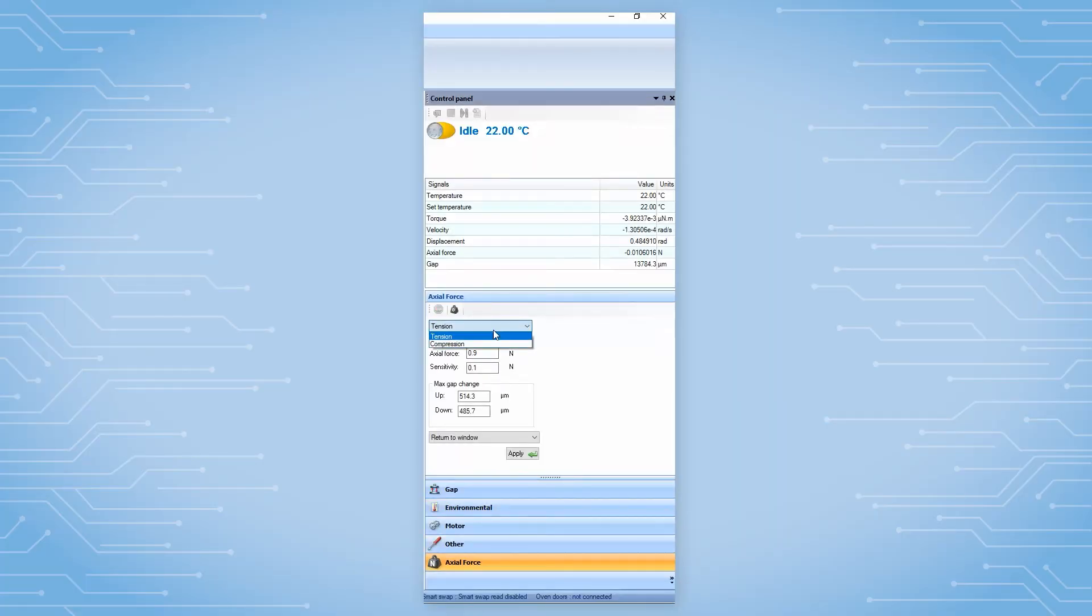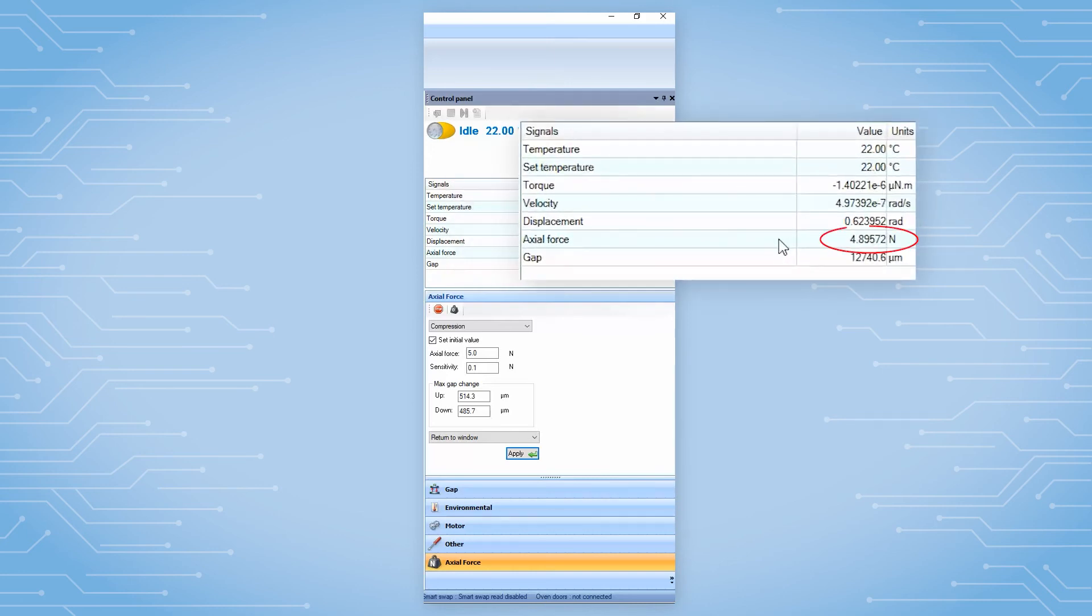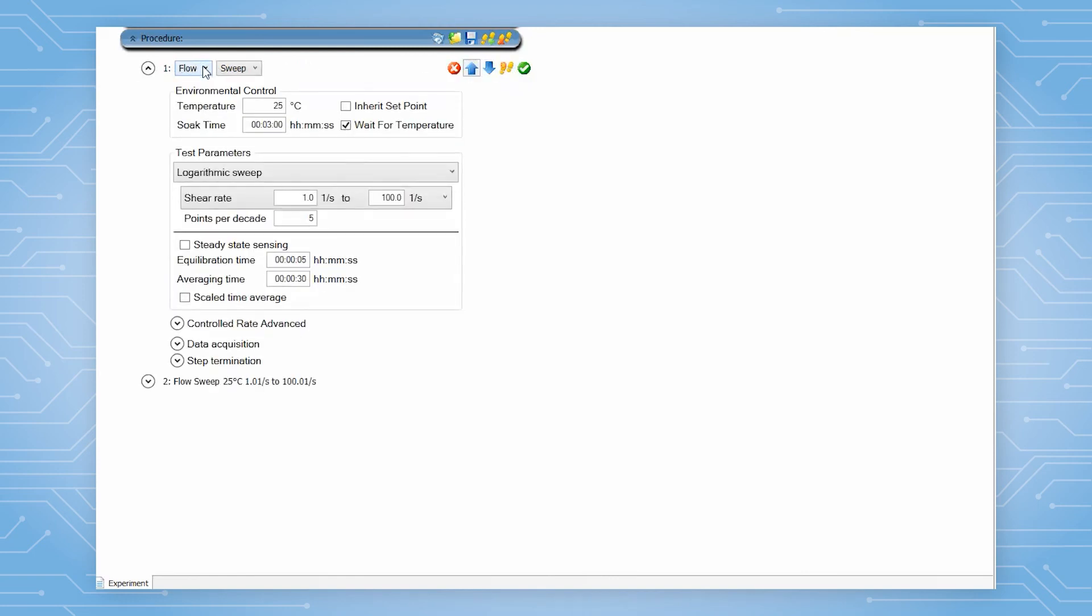Apply a constant axial force, either from the TRIO's control panel, or from the test procedure under the conditioning step.